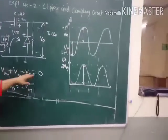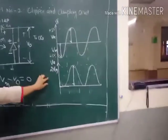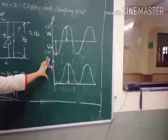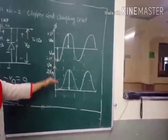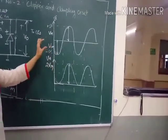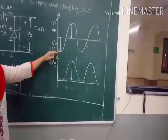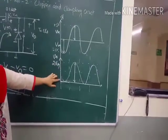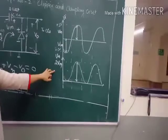In the waveform, the output is twice Vm. The input has been shifted upward by Vm, and since Vm + Vm = 2Vm, the DC level has been shifted toward the positive side. Therefore, this is called a positive clamper.